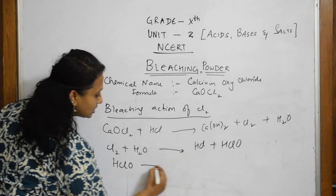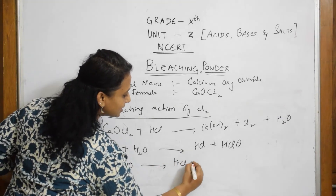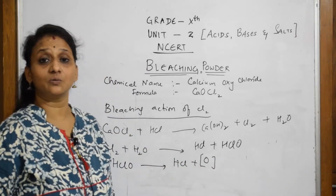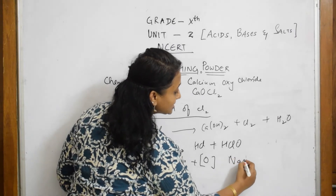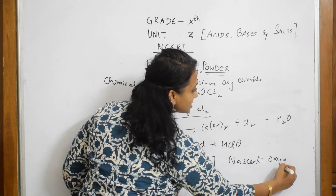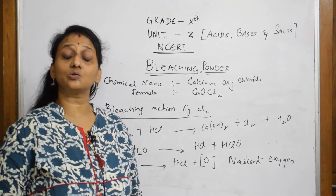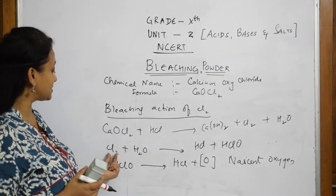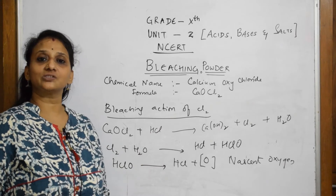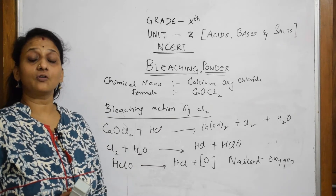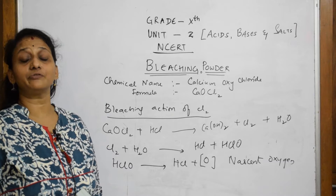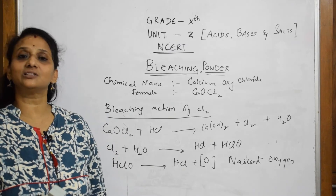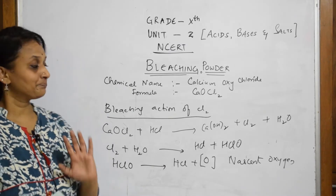This HClO is unstable and further breaks up into HCl and O. This O is called nascent oxygen — N-A-S-C-E-N-T — nascent oxygen. This is the main hero of the whole thing. The chlorine undergoes these reactions and releases nascent oxygen, the most powerful bleaching agent, which enters the pores of the cloth and bleaches the fabric.